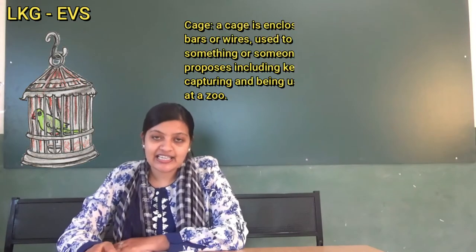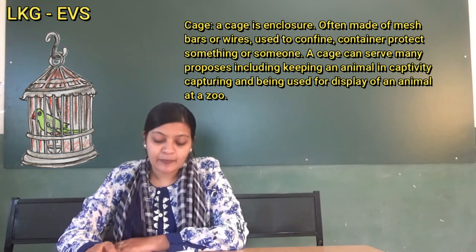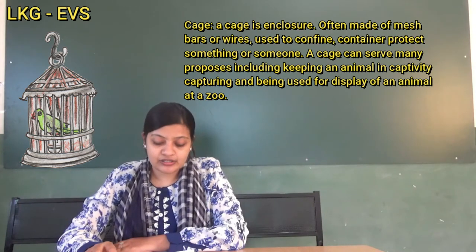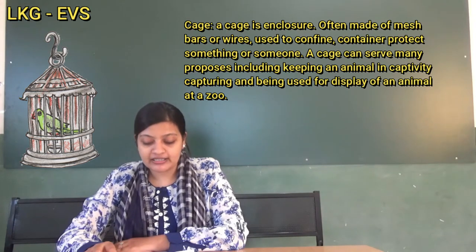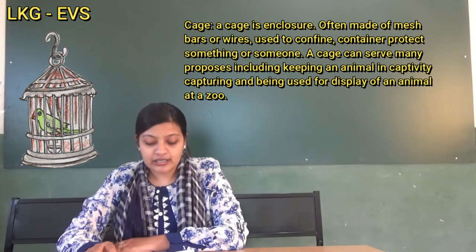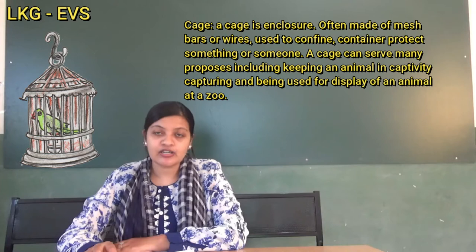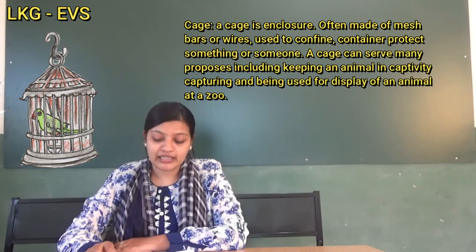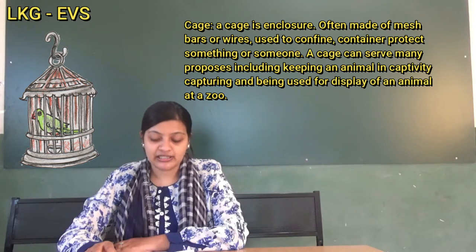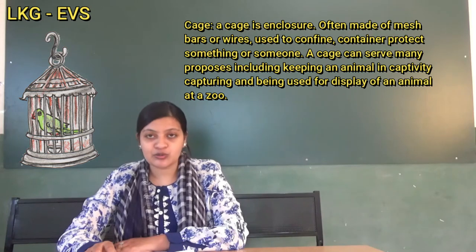Next, C-A-G-E. Cage. A cage is an enclosure, often made of mesh, bars, or wires, used to confine, contain, or protect something or someone. A cage can serve many purposes, including keeping an animal in captivity.